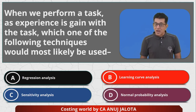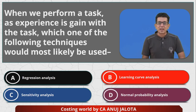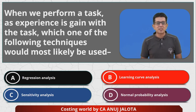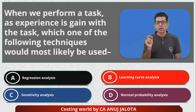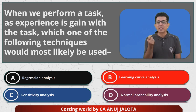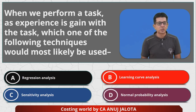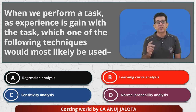The answer is simple, but before that — regression analysis is useful for knowing the trend. Correlation and regression, you might have done that in 12th grade or at CA foundation level. It's basically useful to find out the link between two things.